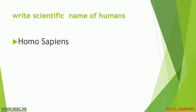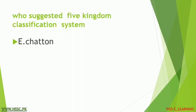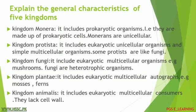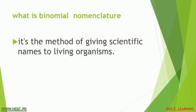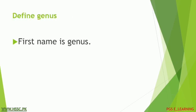Question number nine: define cross breeding with example. Question number ten: write the scientific name of pea. Question number eleven: write the scientific name of humans. Question number twelve: who suggested the five kingdom classification system? Question number thirteen: explain the general characteristics of five kingdoms.